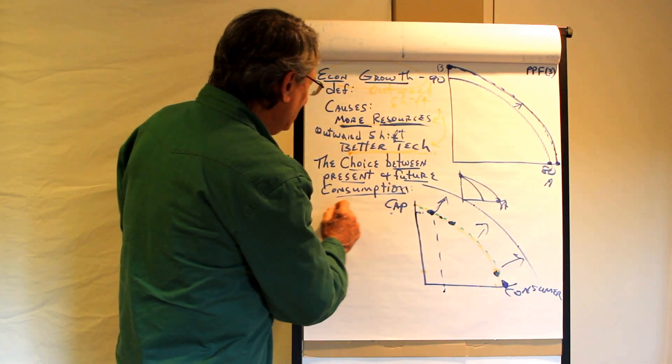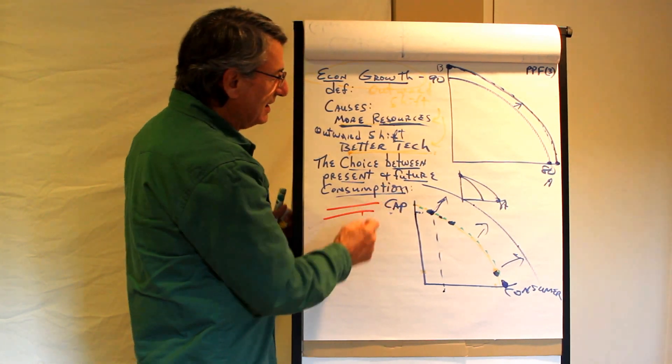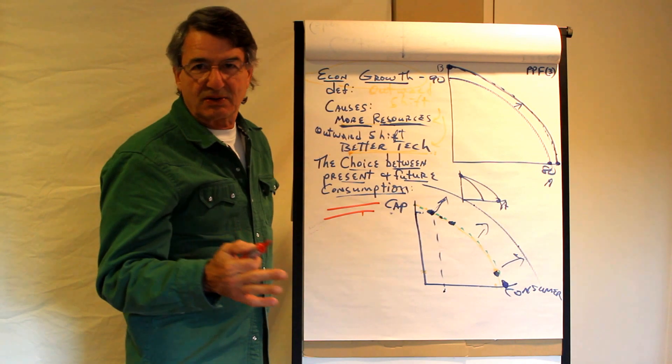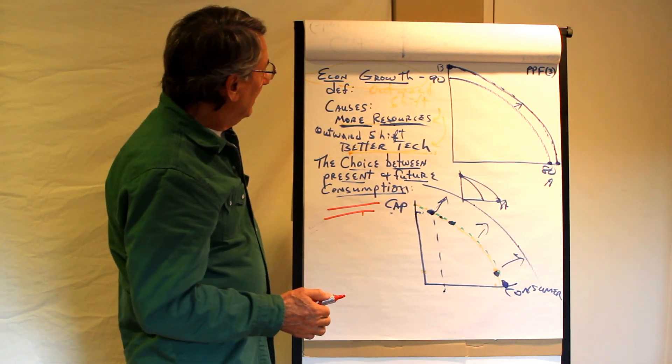Anyway, this is the choice between present and future consumption. Every individual, every society, every family has to make that choice. Anyway, that's production possibilities.